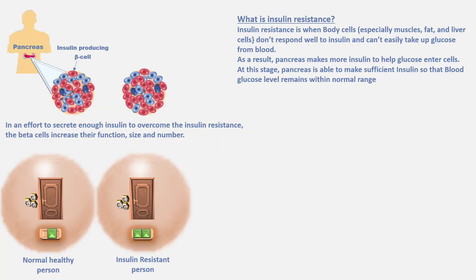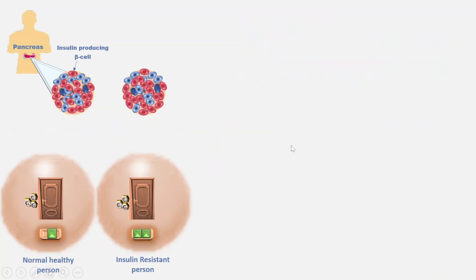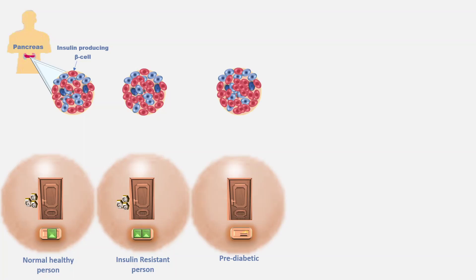Thus, in such a person, though the level of blood glucose is within normal range, the level of insulin in the blood is high. Diabetes can be detected and checked at the insulin-resistant state, so if the person changes his lifestyle, the body reverts to a normal healthy state. But if the person continues with an unhealthy lifestyle, more and more cells become resistant to insulin and he becomes pre-diabetic.